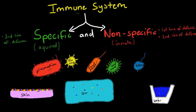Just to name a very few, but there's obviously way more. The idea is we need to protect our body, and there are two systems that do this. There's the nonspecific, also known as innate, and the specific, also known as acquired.